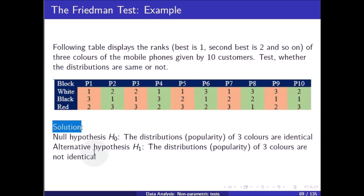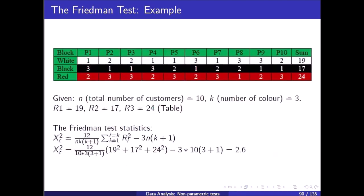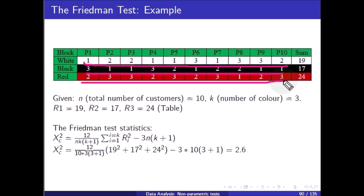The null hypothesis is that the distributions of three colors are identical, and the alternative hypothesis is that the distributions are not identical. These are the ranks of white, black, and red colors respectively. The summation of ranks of white color is 19, the summation of ranks of black color is 17, and the summation of ranks of red color is 24.